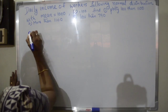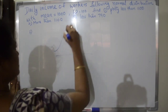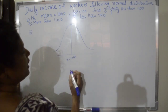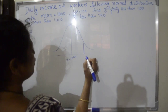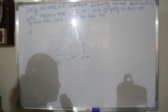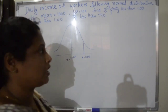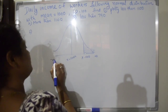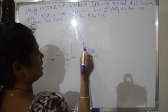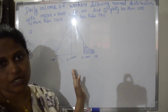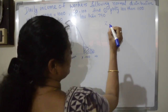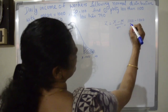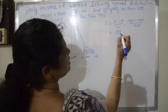Now for the second part: the probability that daily income is more than 1,100. Using the standard normal distribution formula again: Z equals x minus mu divided by sigma equals 1,100 minus 1,000 divided by 100, which is 100 divided by 100, equal to 1. So Z equals 1 again.